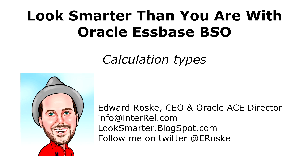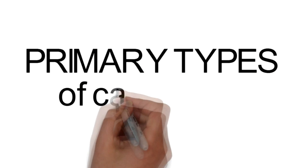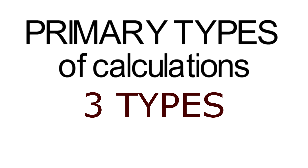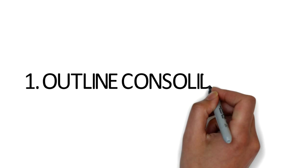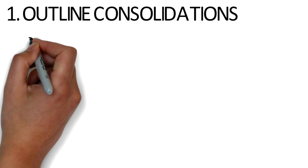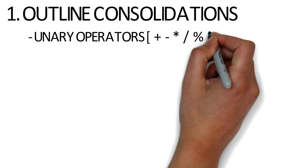Welcome to Look Smarter Than You Are with S-Base Block Storage calculation types. Today we're going to be talking about the primary types of calculations. There are really three. The first type is what's called outline consolidation — this is the one that shows up in the S-Base outline.